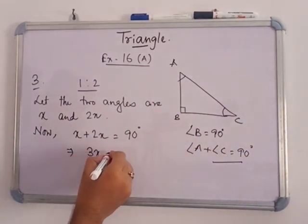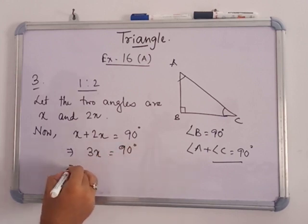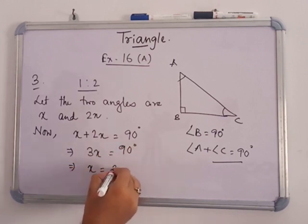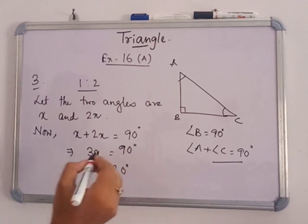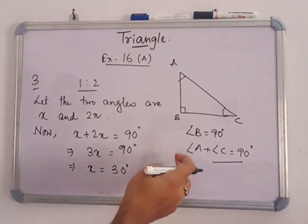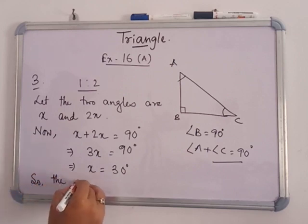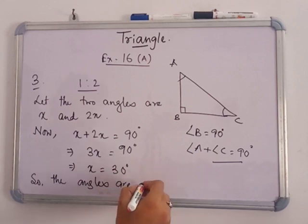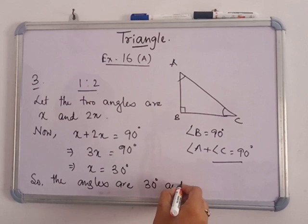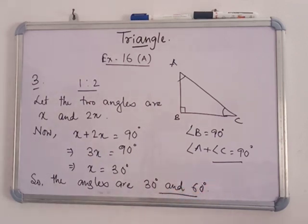Let the two angles be x and 2x. Then x plus 2x equals 90 degrees, so 3x equals 90, giving x equals 30 degrees. The angles are therefore 30 degrees and 2 into 30, which is 60 degrees.